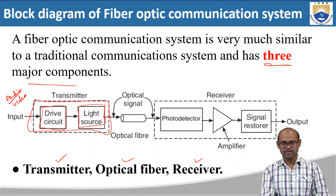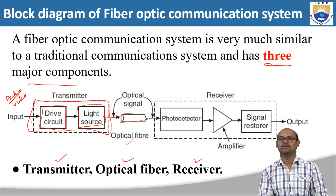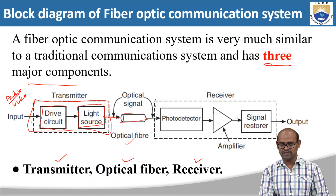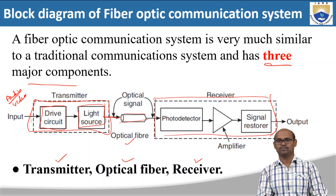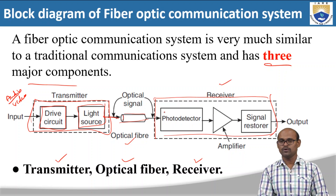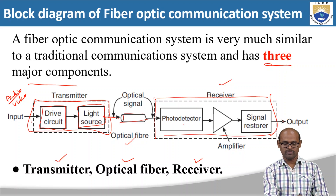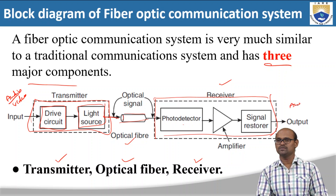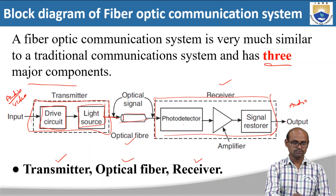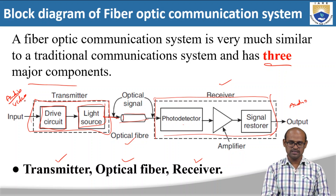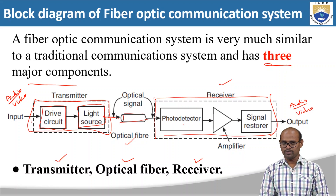The light signal will be propagated down through this optical fiber, and then the light signal received at the end will be given as input to the third component, which is the receiver. In the receiver there is a photo detector, an amplifier, and a signal receiver. Once all these components function, we finally receive the output, which is the audio signal. Whatever we gave as input signal, we receive that signal as output. Let us see the functions of all these components present in the fiber optic communication system.